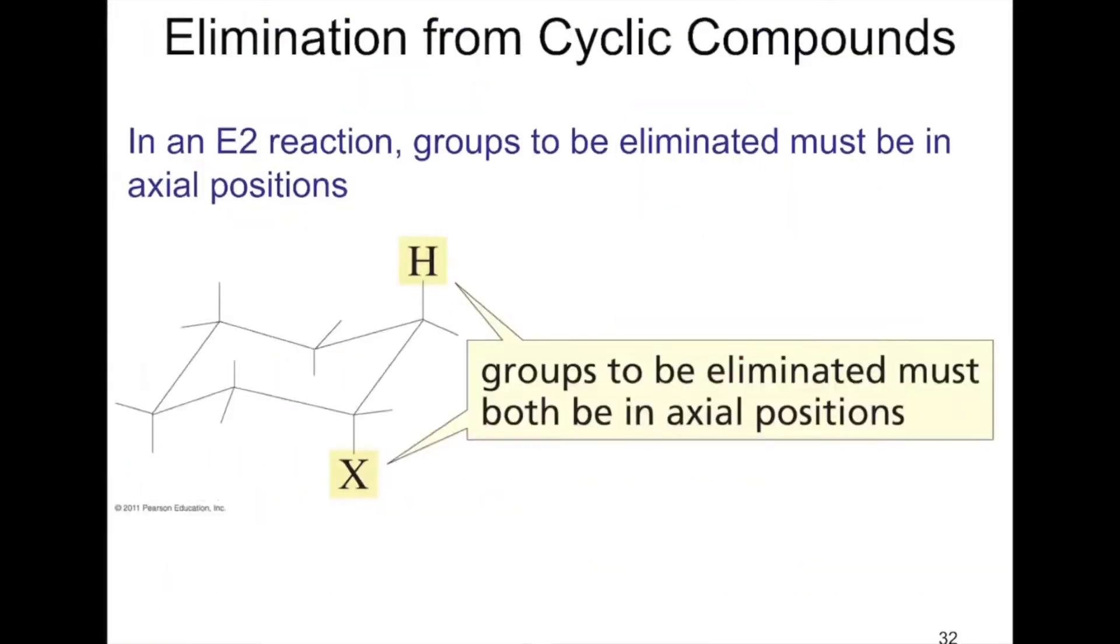The way we think about cyclic compounds being anti-periplanar is to draw cyclohexane in a chair conformation. We can see they're both axial—one goes up and one goes down on adjacent carbons. A base can pull this proton off, forming a double bond and kicking the leaving group out.